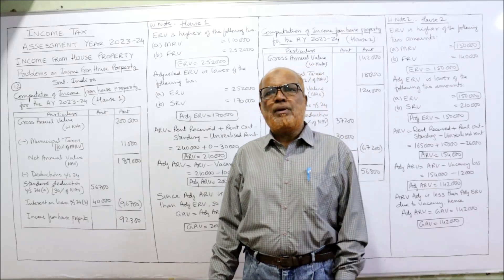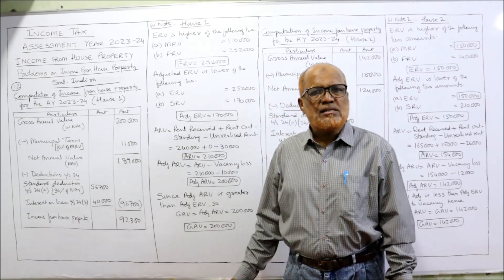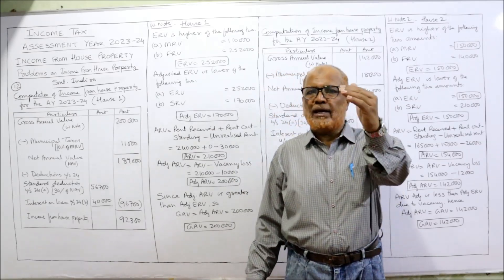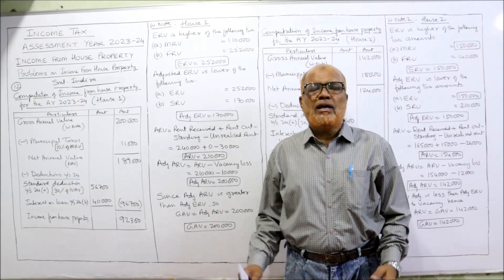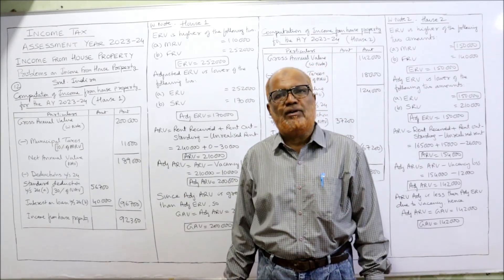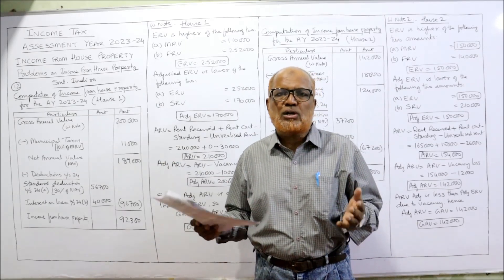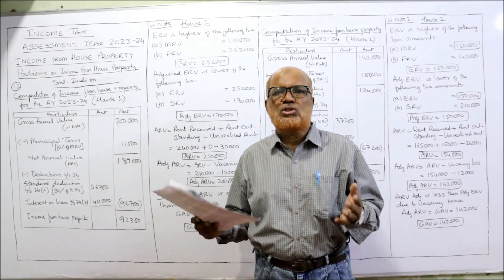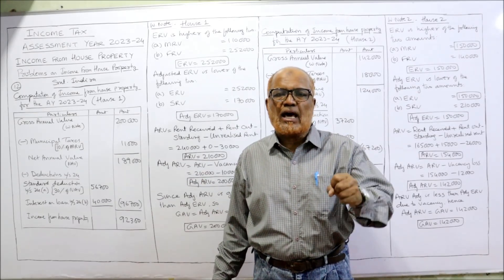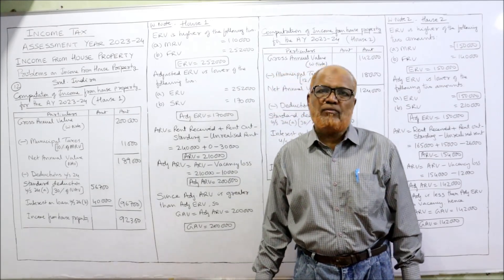The provisions are very simple. First, you have to calculate the GAV. Then deduct the municipal taxes — you will get NAV. Two deductions are allowed under section 24: 24A is the statutory deduction, compulsory deduction, 30% of NAV. And second, under 24B, interest on loan taken to repair, construct, reconstruct, or renovate — if loan is taken and interest is paid, then deduction under section 24B will be allowed.